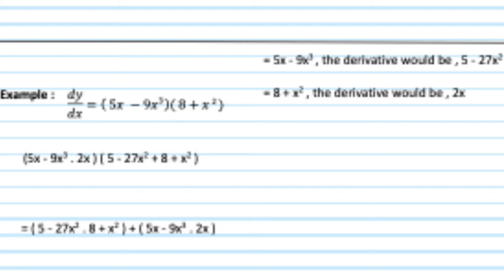So this is the reference of the first prime times the second function, and then plus that with the first function and its secondary prime. In this case, it would be 5x minus 9 cubed times 2x.